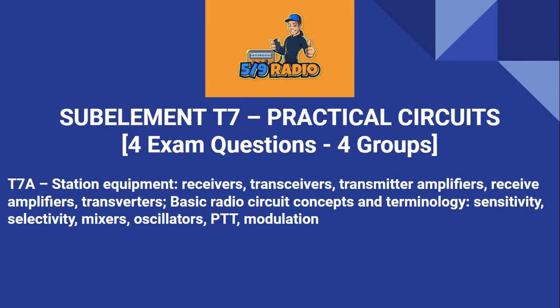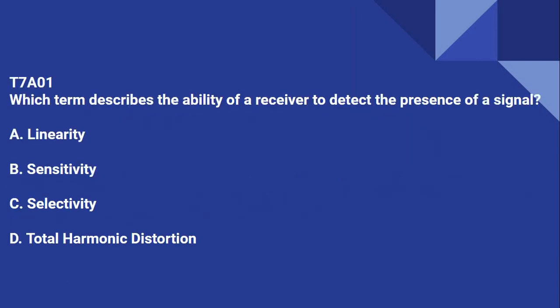Moving on to sub-element T7, Practical Circuits. Another four exam questions come from the four groups in sub-element T7. T7A covers station equipment: receivers, transceivers, transmitters, amplifiers, receive amplifiers, transverters, basic radio circuit concepts and terminology, sensitivity, selectivity, mixers, oscillators, PTT, and modulation. T7A01: What term describes the ability of a receiver to detect the presence of a signal? That's sensitivity.